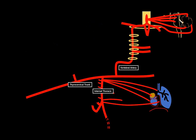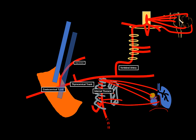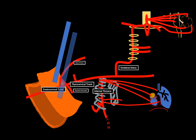That's mostly all for the thyrocervical trunk. Next, the second part of the subclavian, behind the anterior scalenus muscle, gives off the costocervical trunk — a small trunk that divides into two arteries. One is the deep cervical artery, supplying the deep structures of the neck and giving branches for the spinal cord. The other is the supreme intercostal artery, which descends and branches as the posterior intercostal arteries, supplying the muscles of the first and second intercostal spaces.